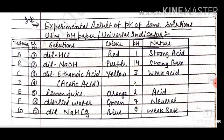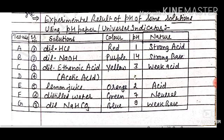Experimental results of pH on some solutions using the pH paper or universal indicator: we have test tubes A, B, C, D labelled in a test tube holder. Dilute hydrochloric acid shows red (strong acid, pH ~1), sodium hydroxide shows purple (strong base, pH ~14), ethanoic acid or vinegar shows orange (weak acid), lemon juice shows yellow-green, and distilled water shows green (neutral, pH 7).